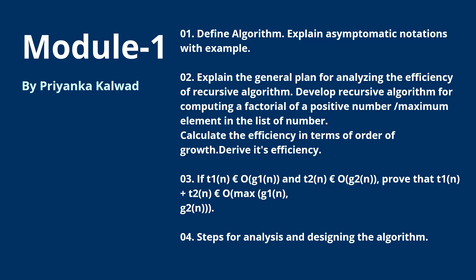The second question is: explain the general plan for analyzing the efficiency of a recursive algorithm. From this, you will get any one — either the algorithm for computing the factorial of a positive number, or the maximum element in a list of numbers. They can also ask about efficiency in terms of order of growth.